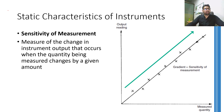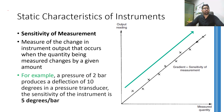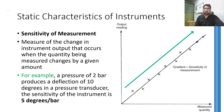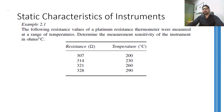Technically, the gradient of the output versus input graph represents sensitivity. Therefore, for a pressure sensor showing a 10-degree change in the position of the pointer for a 2-bar change in input pressure, the sensitivity would be 5 degrees per bar — because for every bar, the pointer changes 5 degrees, and for 2 bars it changes by 10 degrees.